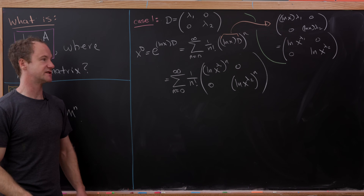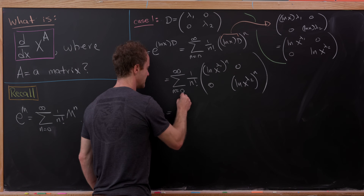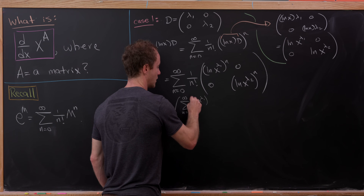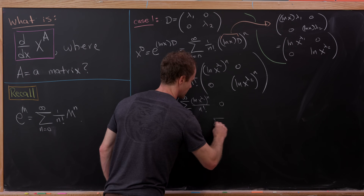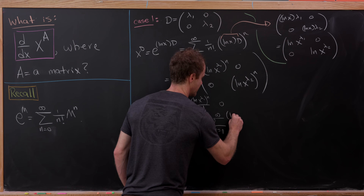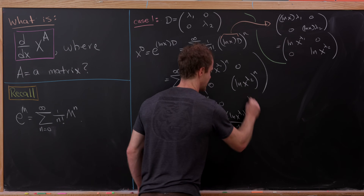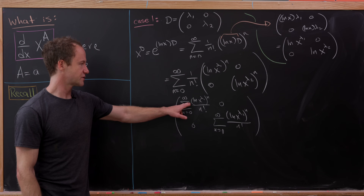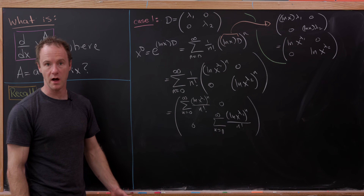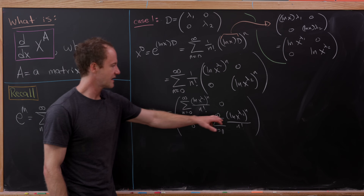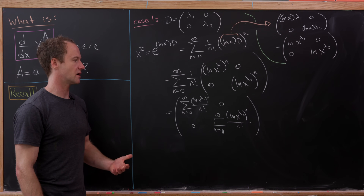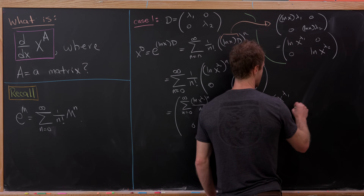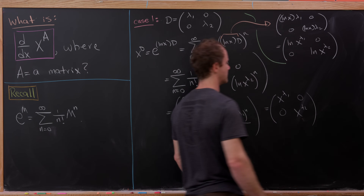Since the sum of matrices is done component-wise, we can bring the sum inside. The upper-left entry becomes the sum of (ln(x^λ₁))^n / n!, and similarly the lower-right uses λ₂. These are just the Taylor expansions of the exponential function, so those sums equal e^(ln(x^λ₁)) = x^λ₁ and e^(ln(x^λ₂)) = x^λ₂ respectively. So x to the D is the diagonal matrix with x^λ₁ and x^λ₂ on the diagonal.